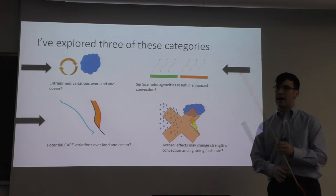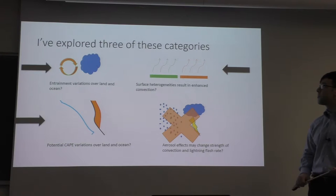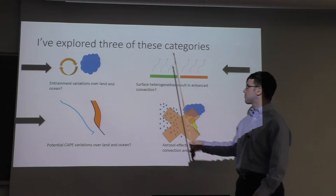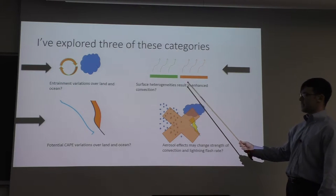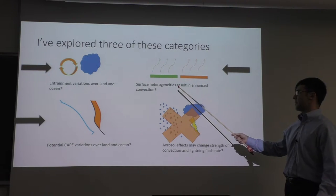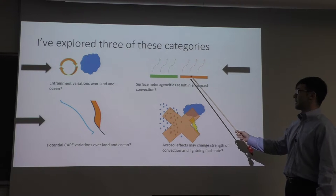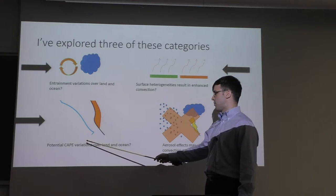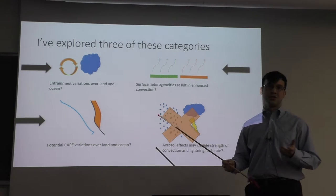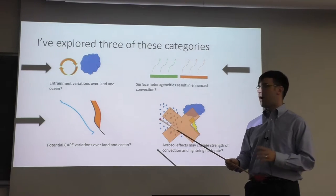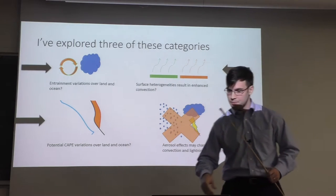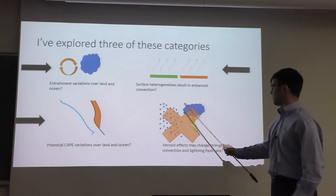I've explored the first three categories. The first is entrainment variations over land and ocean. The second is testing the effectiveness of surface heterogeneities resulting in enhanced CAPE. The third is a hypothesis for potential CAPE variations over land and ocean, under the assumption that land is drier than ocean in the free troposphere — dryness does affect CAPE positively. I don't show any aerosol tests in this talk.